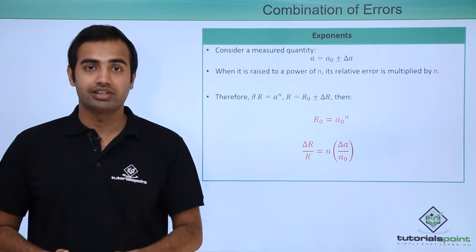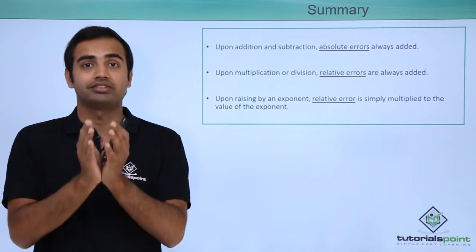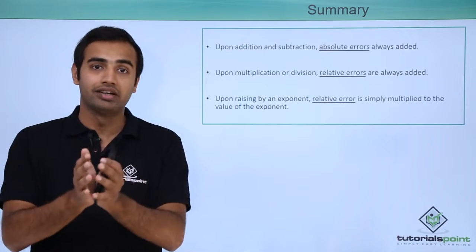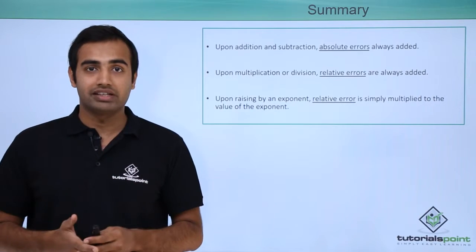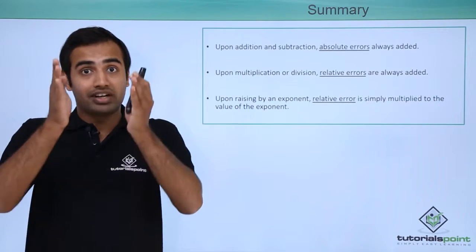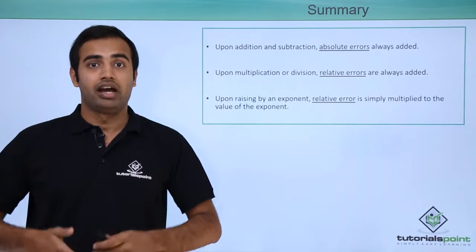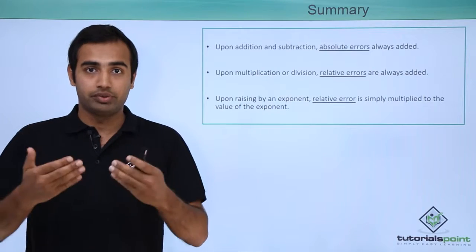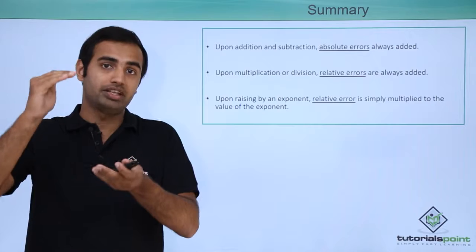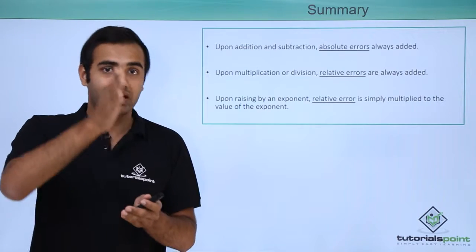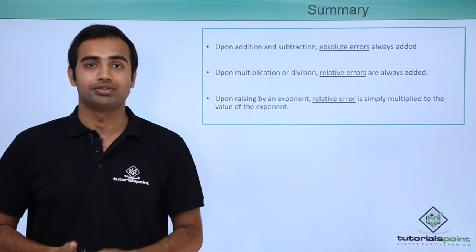Summarizing what we just learned: upon addition and subtraction, absolute errors in the initial numbers are added to give the absolute error in the final result. Upon multiplication and division, the sum of relative errors in the initial numbers gives the relative error in the final result. And whenever a number is raised by an exponent, the relative error in the result is simply equal to the product of the exponent and the relative error in the initial number. Thank you.